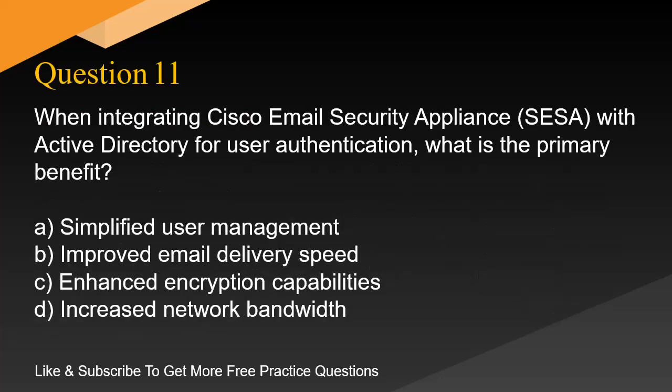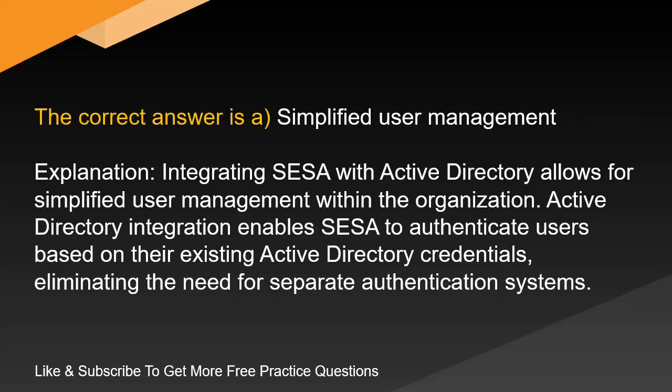Question 11. When integrating Cisco Email Security Appliance (SESA) with Active Directory for user authentication, what is the primary benefit? A. Simplified user management. B. Improved email delivery speed. C. Enhanced encryption capabilities. D. Increased network bandwidth. The correct answer is A. Simplified user management. Integrating SESA with Active Directory allows for simplified user management within the organization. Active Directory integration enables SESA to authenticate users based on their existing Active Directory credentials, eliminating the need for separate authentication systems.